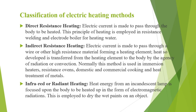Direct resistance heating: in this method, current is made to pass through the body which is to be heated. Application is in resistance welding and electrode boilers for heating water. Indirect resistance heating: in this method, current is made to pass through a wire or other high resistance material which forms the heating element. The heat developed is transferred from the heating element to the body by radiation or convection.